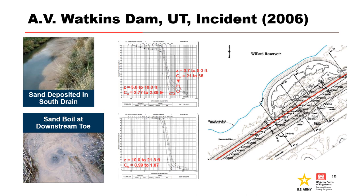Reclamation's A.V. Watkins Dam in Utah was a case where the overlying blanket contained thin hardpan layers that formed the roof for backward erosion piping of underlying fine sands into a downstream ditch. The horizontal gradient was calculated to be 0.06. The dam is 36 feet high at its maximum section and slightly more than 14.5 miles long. The dam nearly failed in the same general area as a seepage incident during initial filling, and muddy seepage was noticed by a rancher.